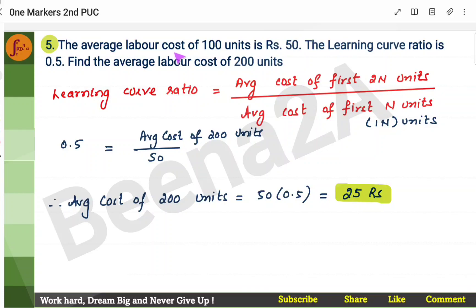This is a problem. The average labor cost of 100 units is given, and that is 50 rupees. The learning curve ratio is given. You need to find the average labor cost of 200 units. Now, you will have to use the learning curve ratio formula. Learning curve ratio is given. Learning curve ratio is 0.5. You need to find the average labor cost of 200 units. You need to find this, 2N units. The average labor cost of 100 units is given, which is 50 rupees. This is given.